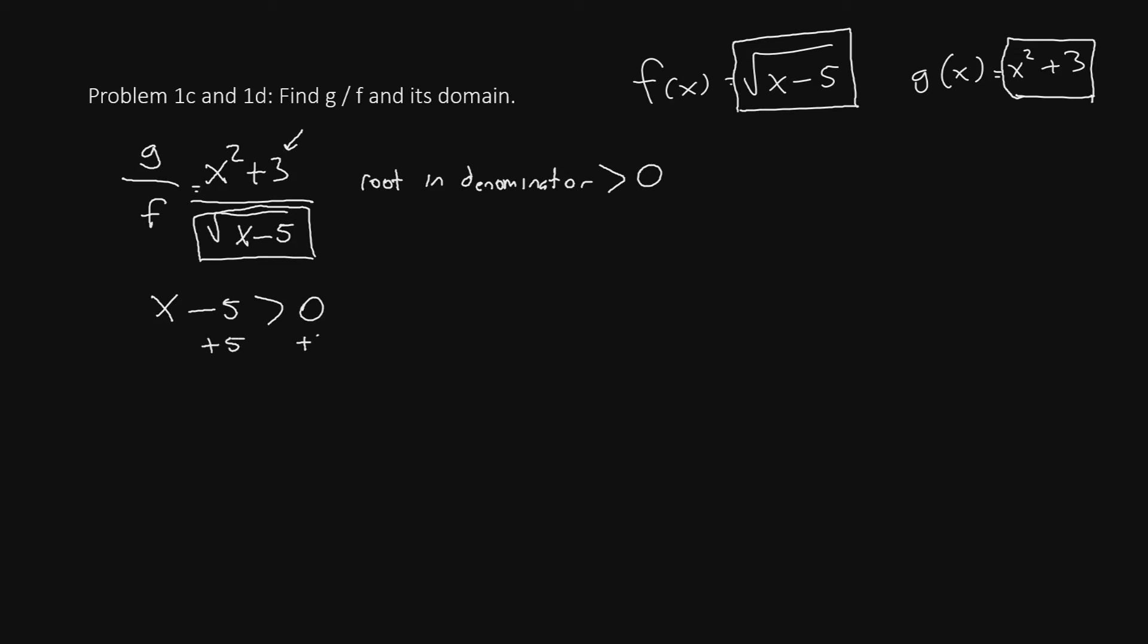So we'll say x minus 5 is strictly greater than 0. Just like in the first part, we'll add 5 to both sides, and we'll have x is strictly greater than 5.